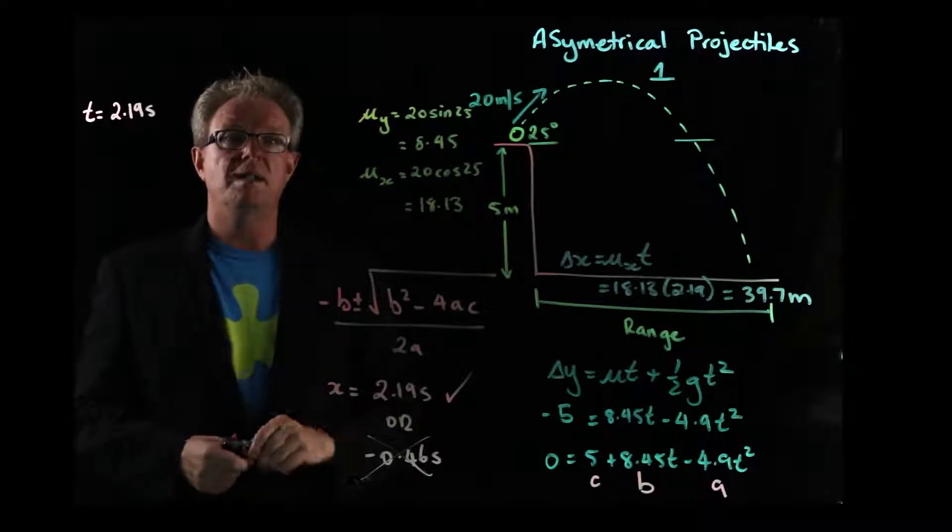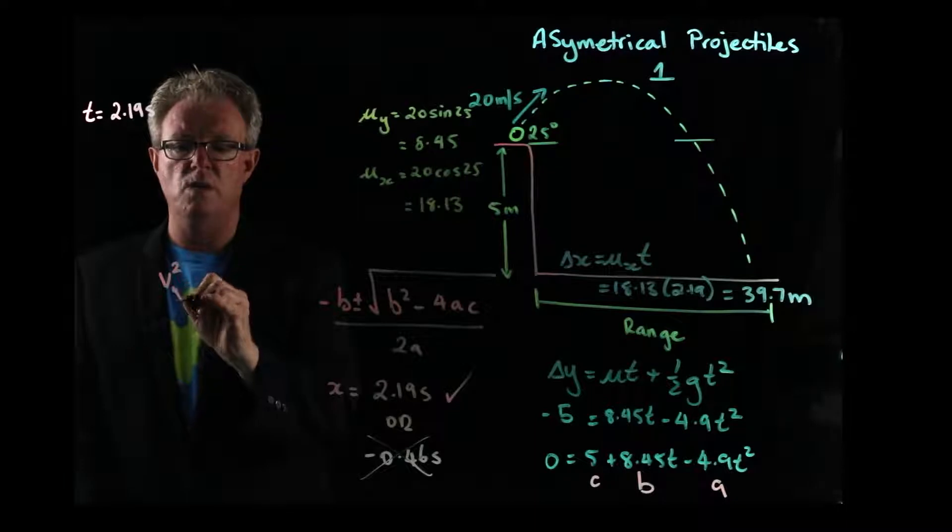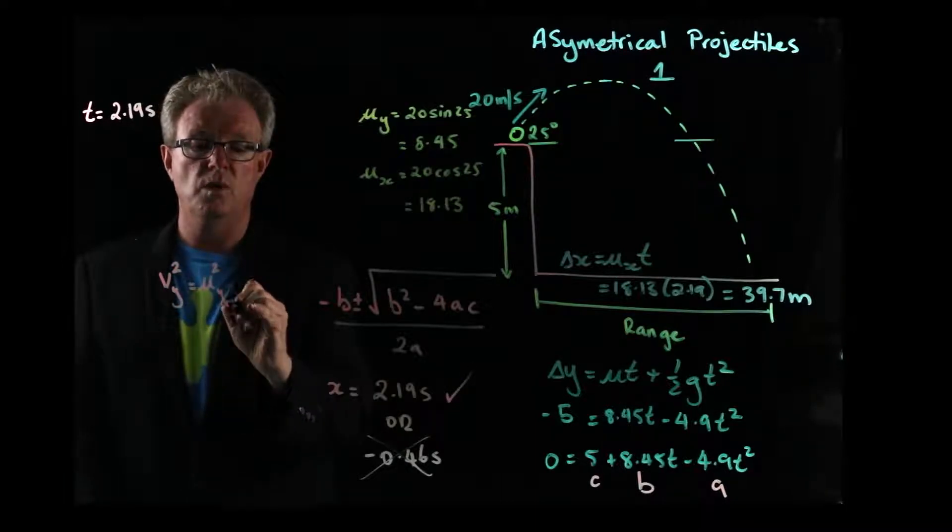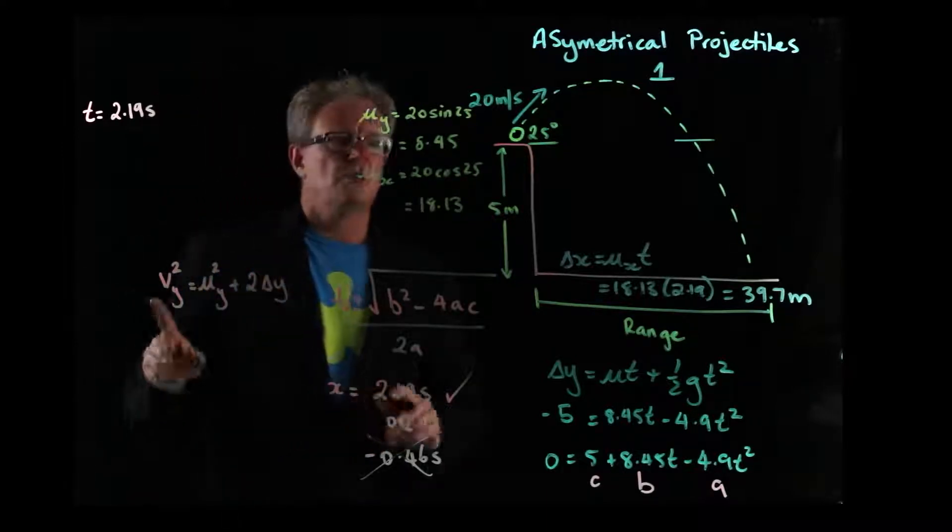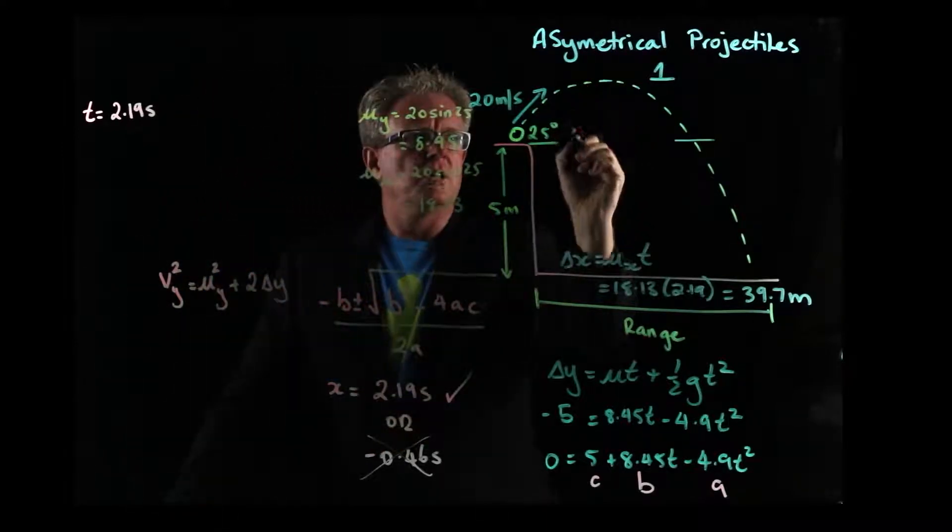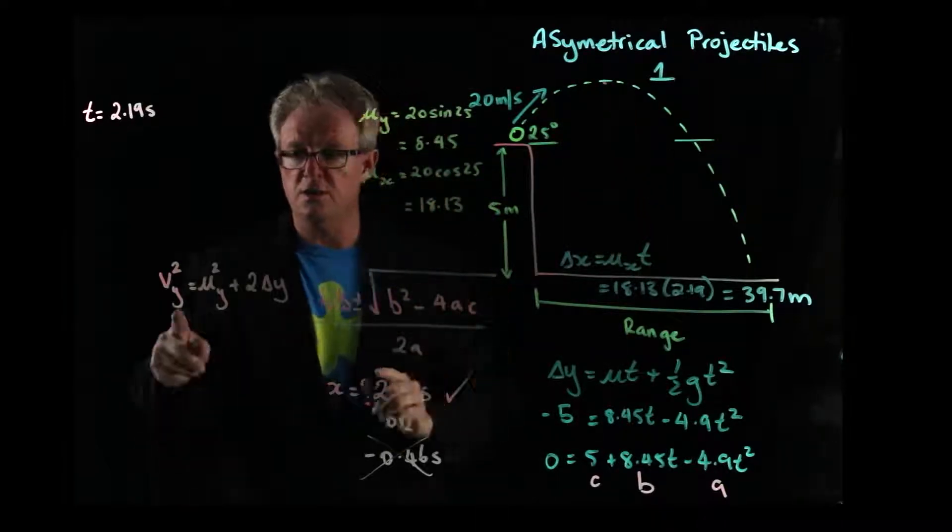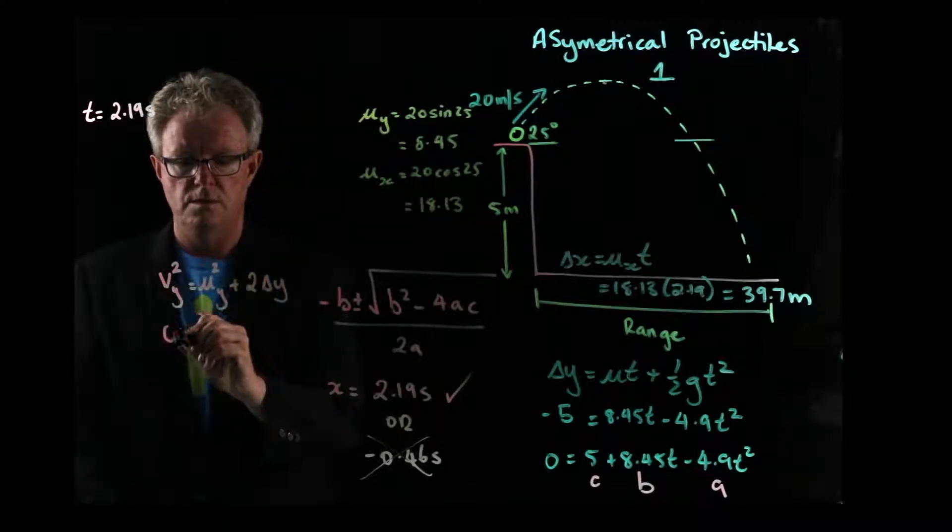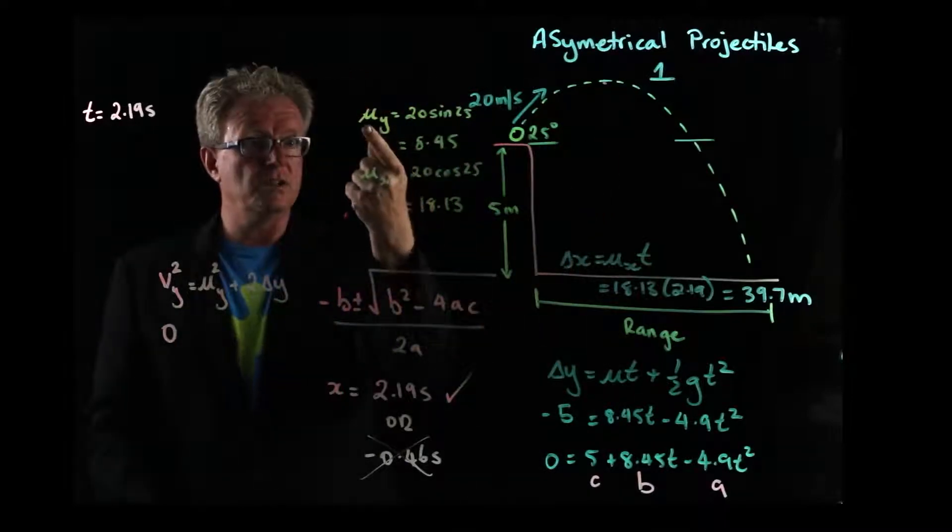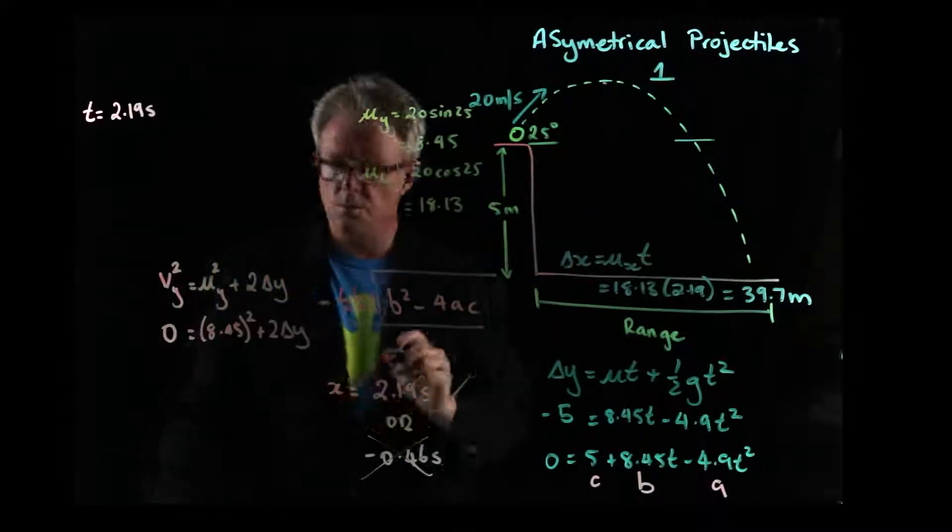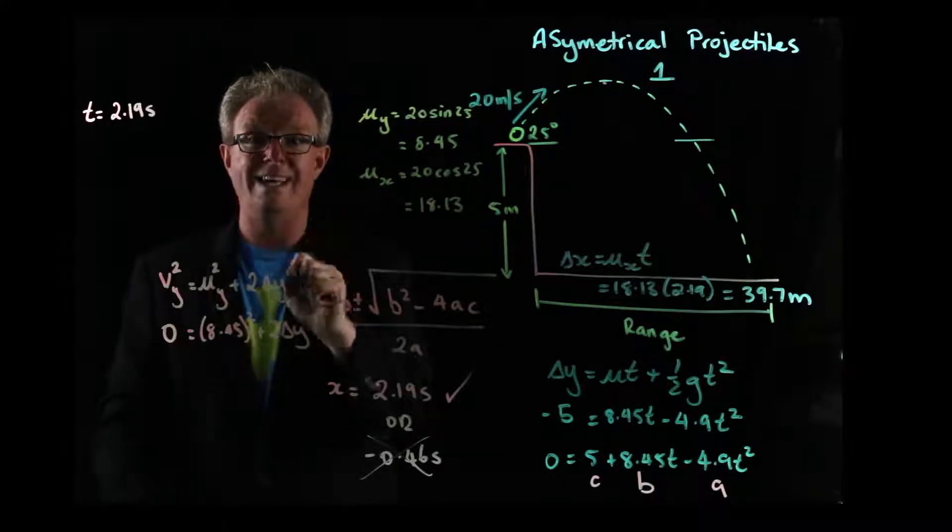Now we need to work out the maximum height. So with the maximum height, we can use this equation here. v squared in the y direction is equal to u squared in the y direction plus 2 times acceleration times the change in y. So we're looking at this section here. If we say that at the maximum height, the velocity in the y direction is zero. And we know the initial velocity in the y direction. We calculated that before. Of course, I forgot an acceleration due to gravity there. Because it's 2as or 2ay. So let's chuck that in.